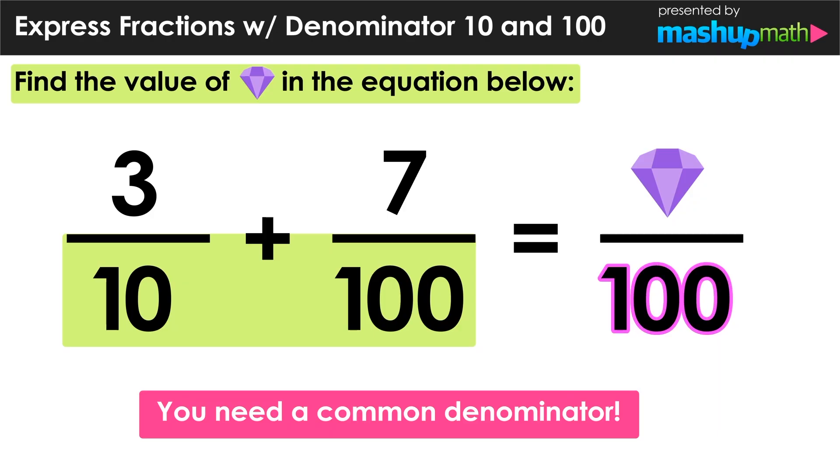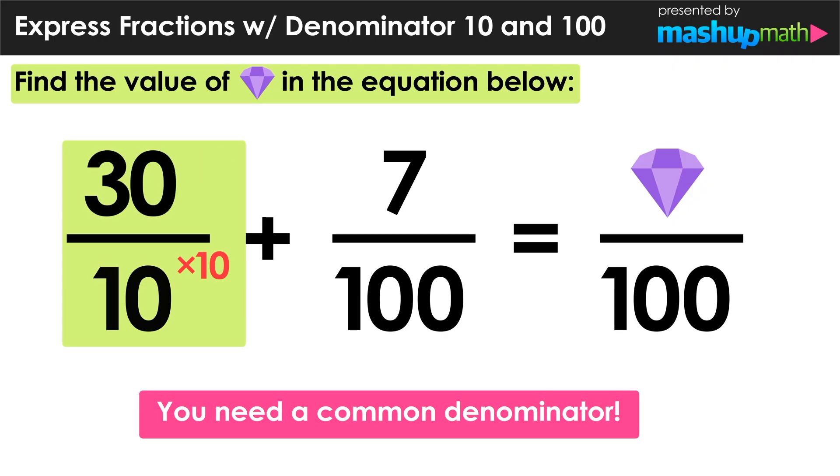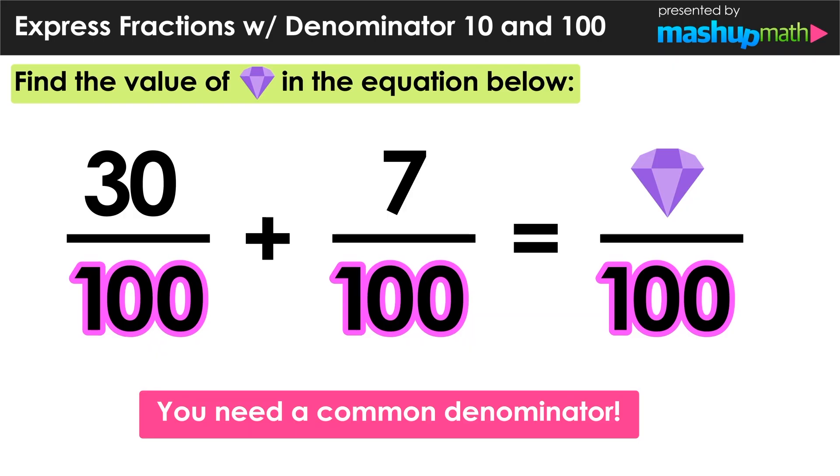So before we perform any operations on the left side of the equal sign, we need to change that first fraction into an equivalent fraction whose denominator is 100, and we can do that by multiplying both the numerator and the denominator by 10. Doing this will change the fraction to an equivalent fraction. 3 over 10 becomes 30 over 100, and now we do have a common denominator.